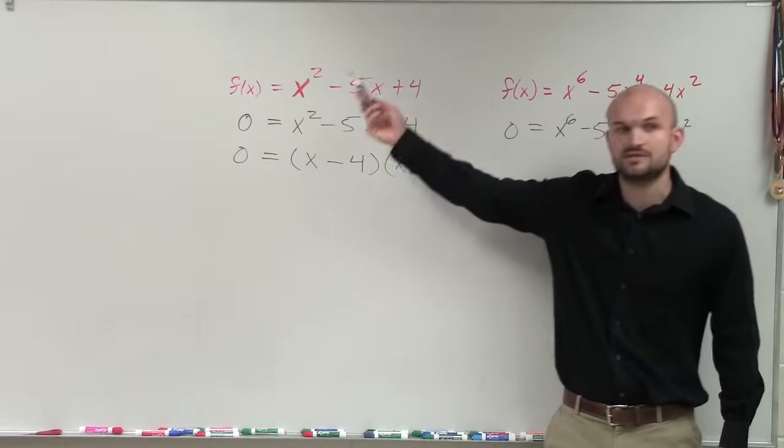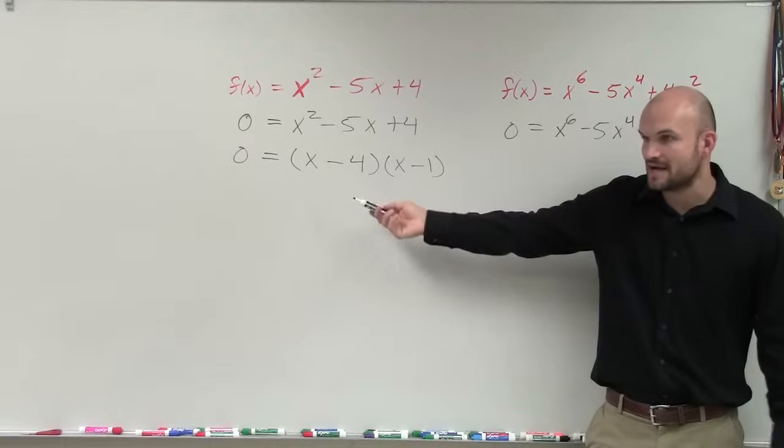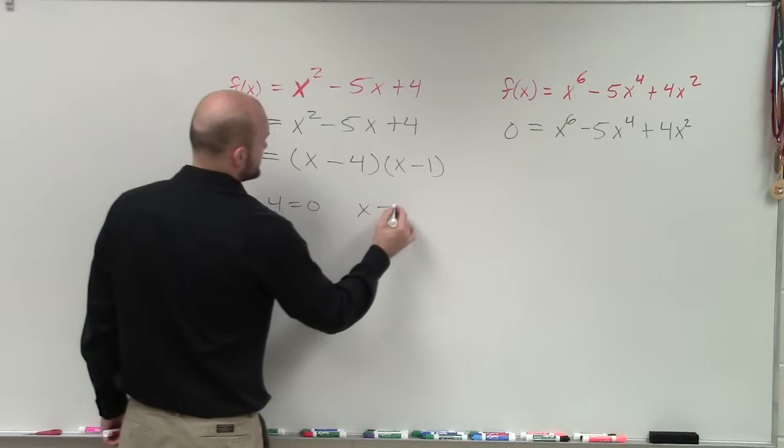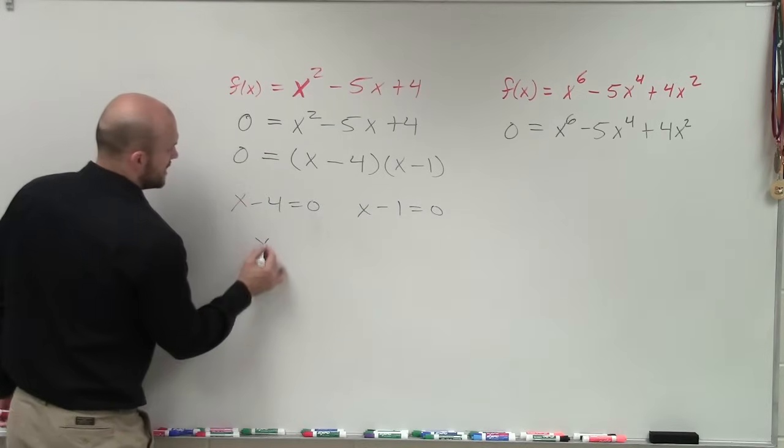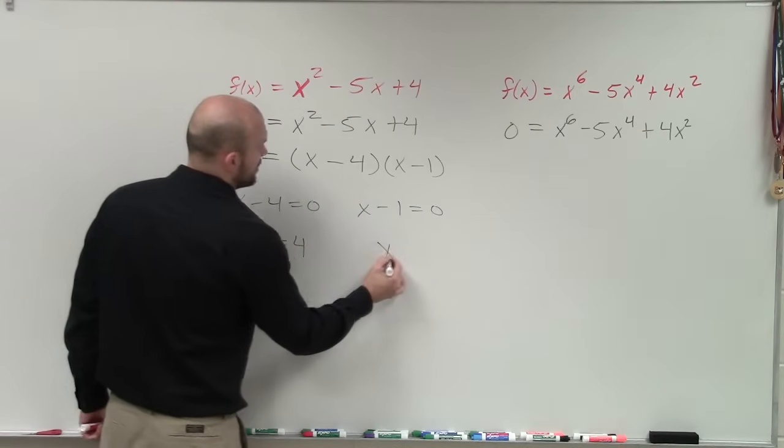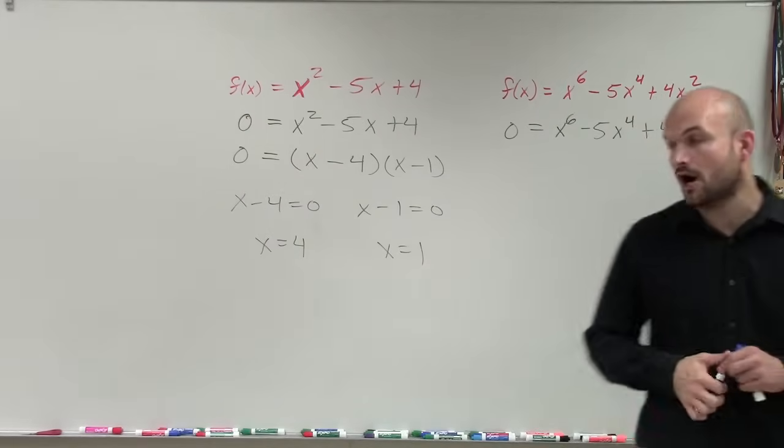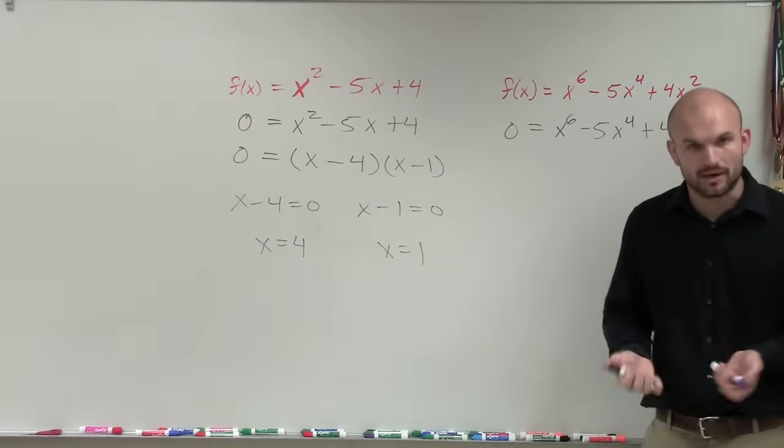And so if I take a function, set it equal to zero, I factor. Now I apply the zero product property. x minus four equals zero, x minus one equals zero. Add the four to both sides. Add the one to both sides. And therefore, you can see the zeros here are x equals four and x equals one.